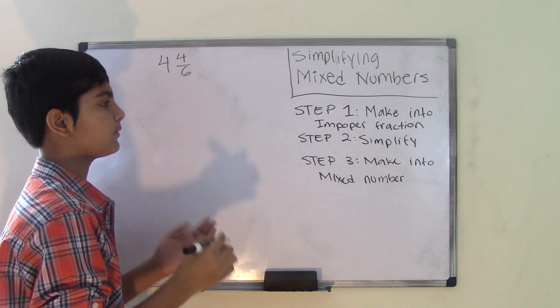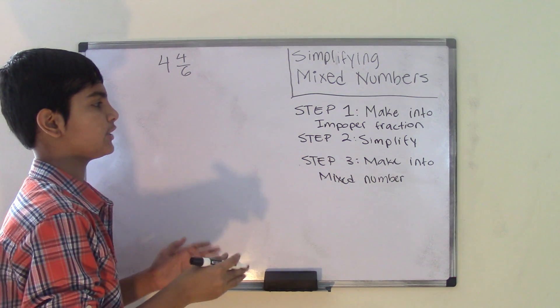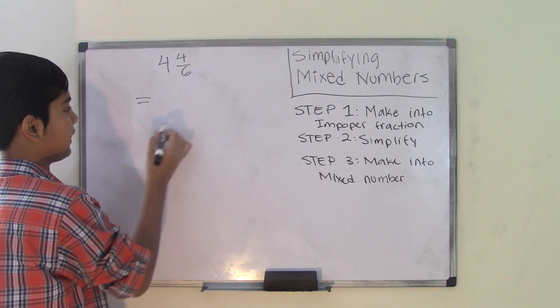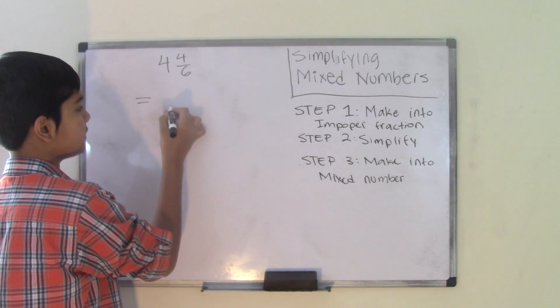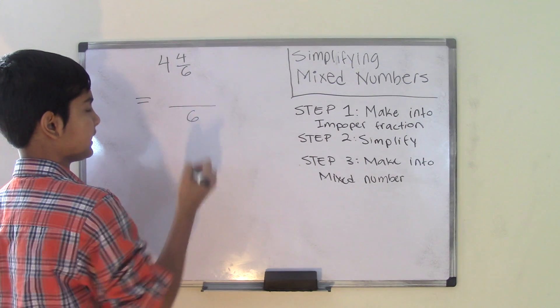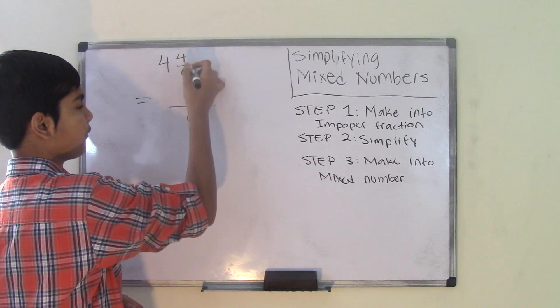And to simplify a mixed number, step number 1 would be to make it into an improper fraction. And to make a mixed number into an improper fraction, you keep the denominator as it is. So for the improper fraction, the denominator will stay the number 6, from the fraction 4 over 6.